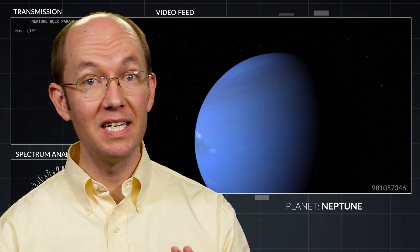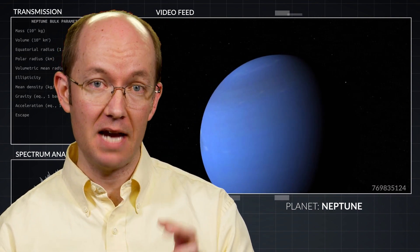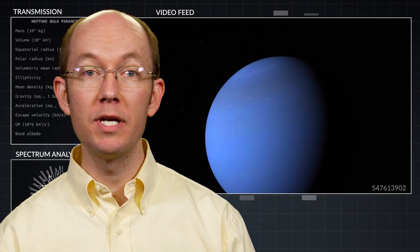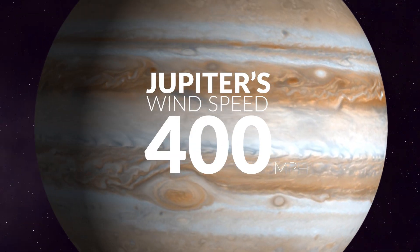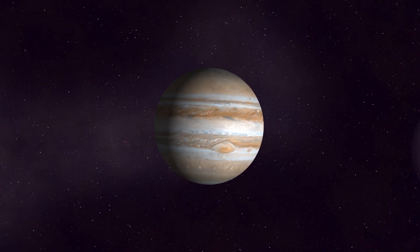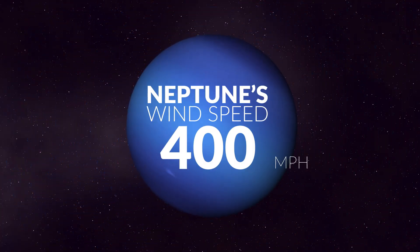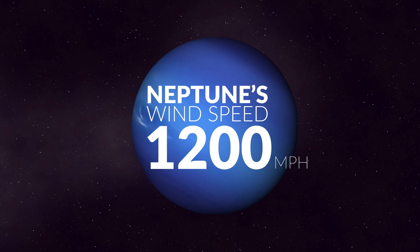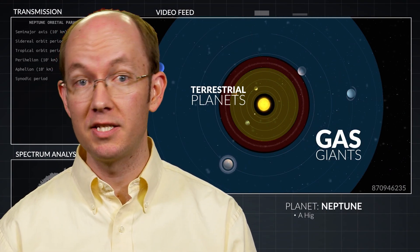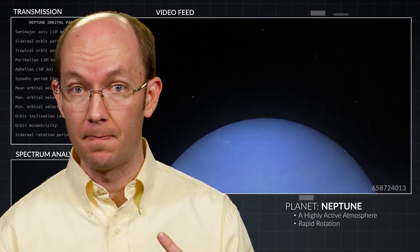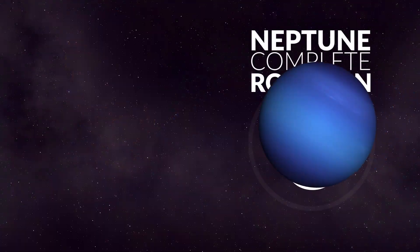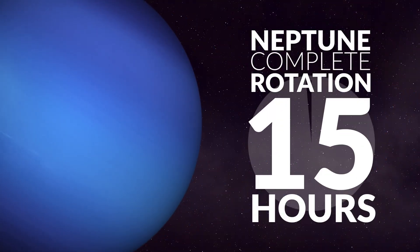When we consider the most distant planet, Neptune, we find that it has a highly active atmosphere. While Jupiter's winds reach speeds of 400 miles per hour, Neptune has the highest atmospheric wind speed in the entire solar system, reaching speeds nearly 1200 miles per hour. Like all of the gas giant planets, Neptune has a rapid rotation, especially for its size, completing one rotation every 16 hours.